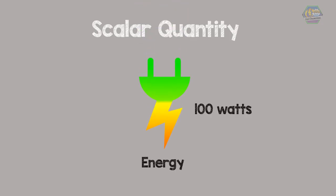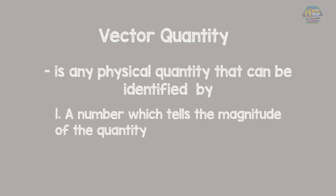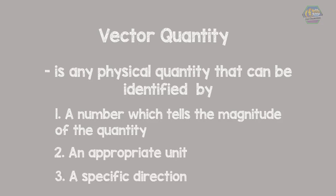Now, on the other hand, is the vector quantity. A vector quantity is any physical quantity that can be identified by: number one, a number which tells us the magnitude; number two, an appropriate unit; number three, a specific direction. This means that a vector is both a representation of a quantity and its direction. This includes displacement, velocity, acceleration, and many more.